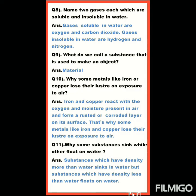Question 9: What do we call a substance that is used to make an object? उस substance का नाम बताना है जो object को बनाने में use होता है। Answer: Material। Material is a substance that is used to make an object — material एक substance के रूप में use होता है जो object बनाता है।